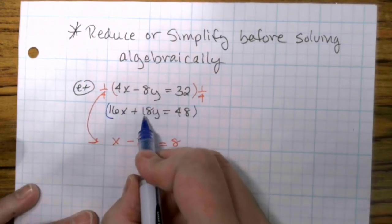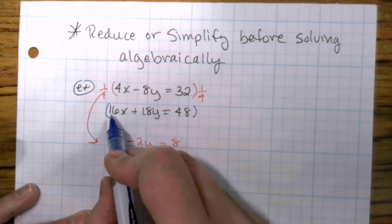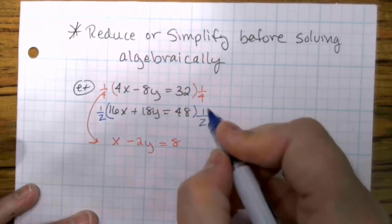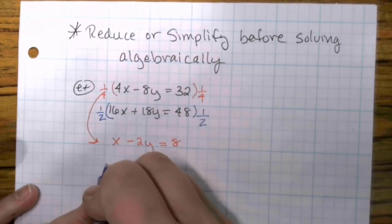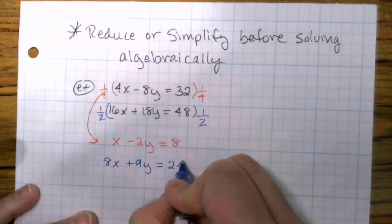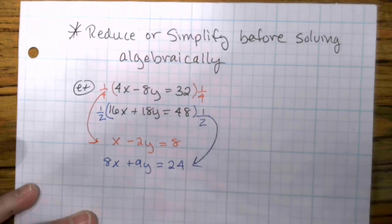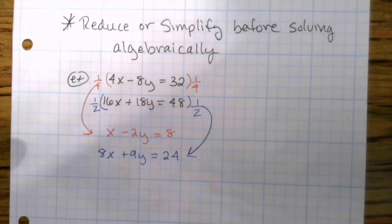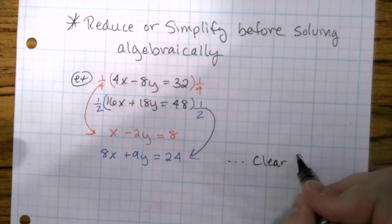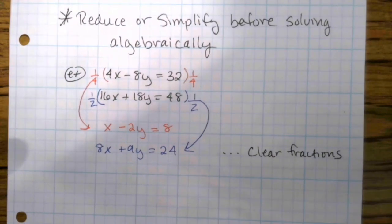This one, 18 is 2 times 9. 16 is not divisible by 3. So I can take a 1 half out of all three of these, so that will give me an 8x plus a 9y equals 24. And now I have two equations that are much, much, much easier to solve and easier to deal with. You could also potentially, if there are fractions, you could clear fractions to make your equation easier.